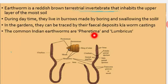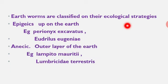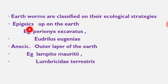Why are earthworms called the farmer's best friend? Because of the multitude of services they provide that improve soil health and plant health. Earthworms are classified based on their ecological roles. The earthworm is classified in the phylum Annelida. Generally, earthworms fall under three categories: Epigeic, Anecic, and Endogeic.